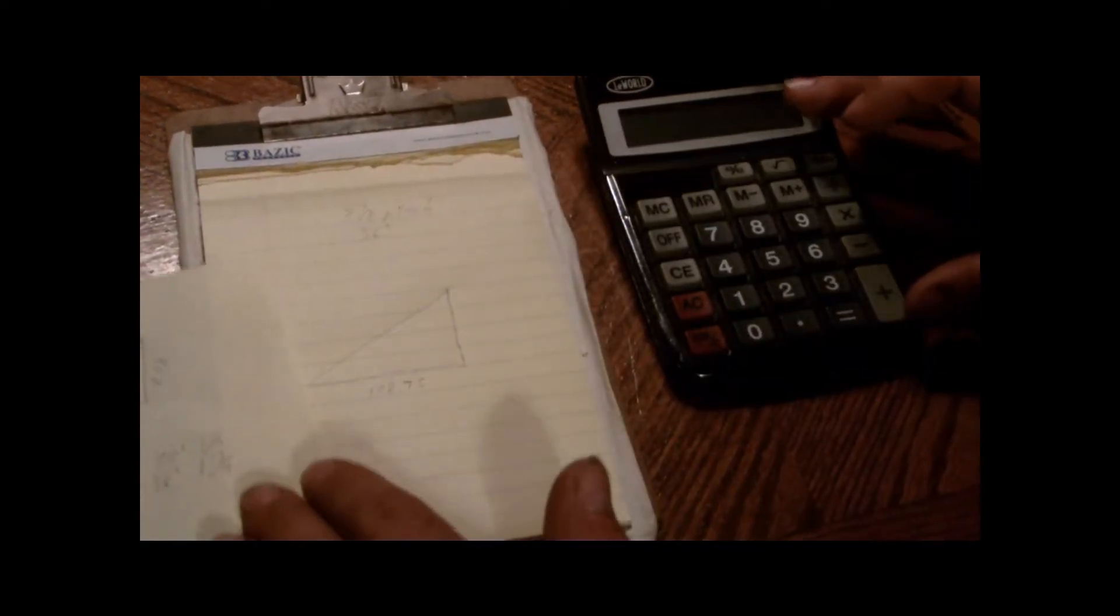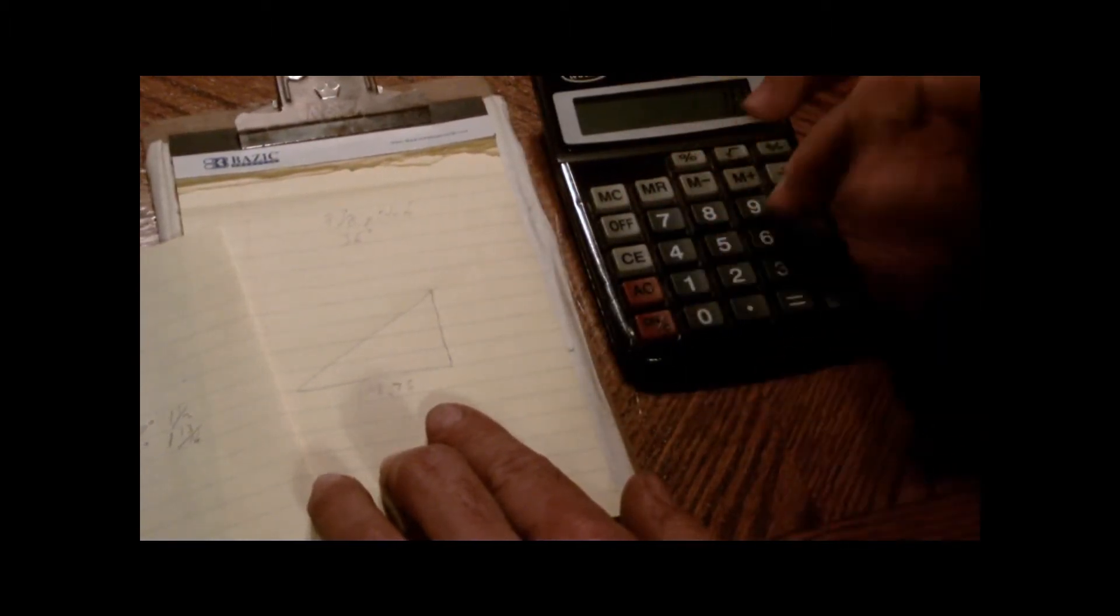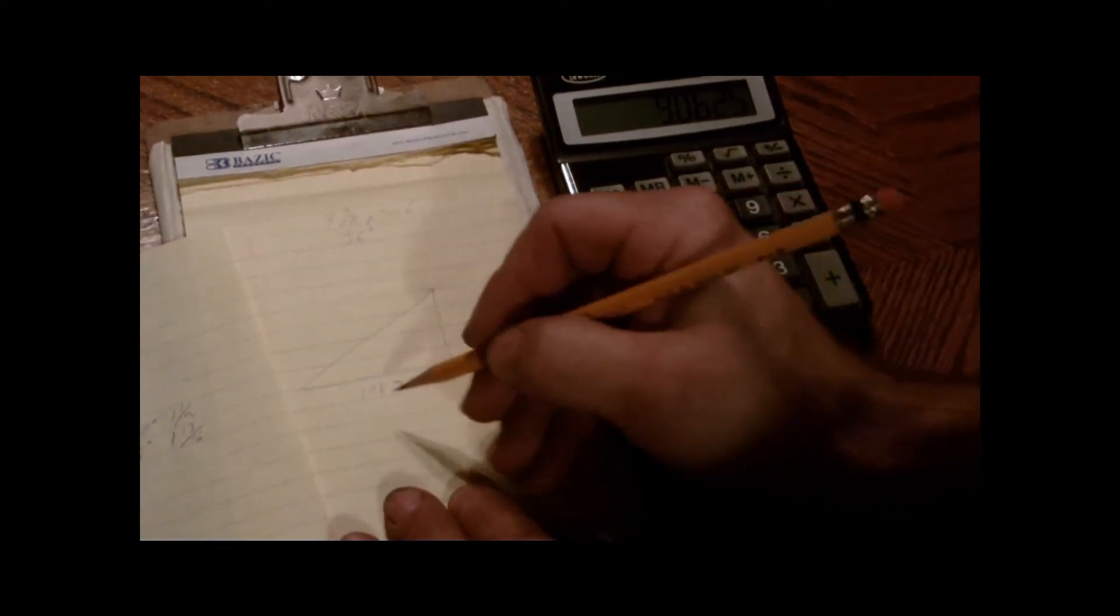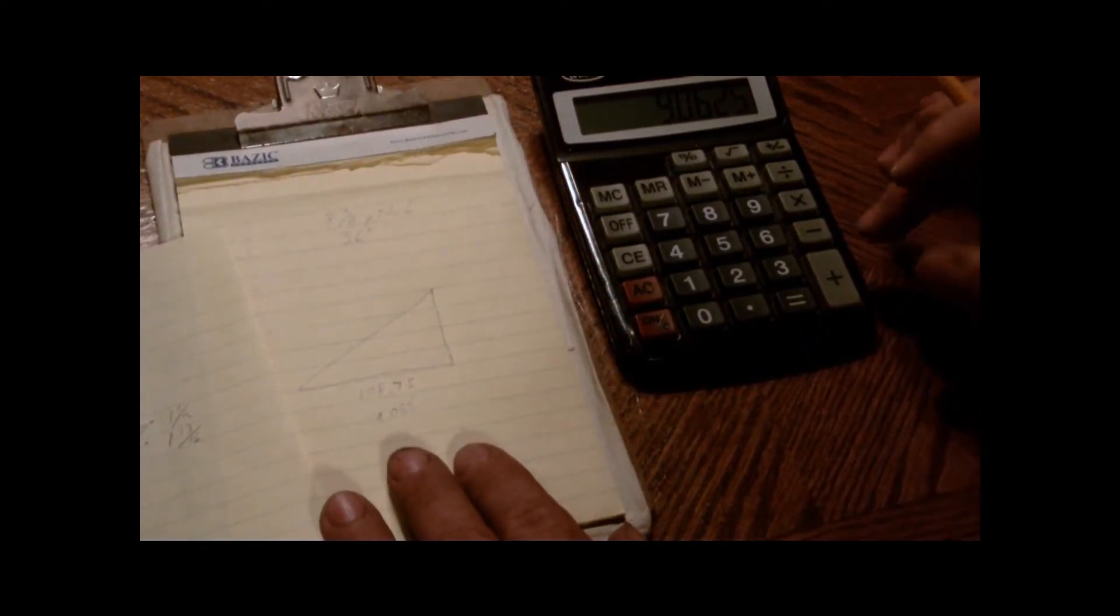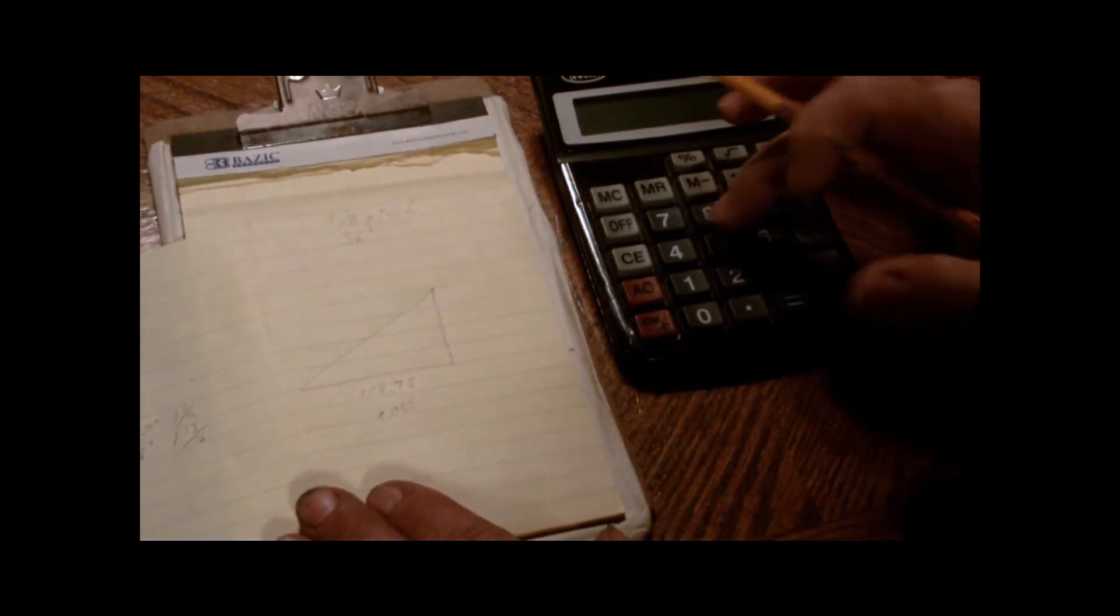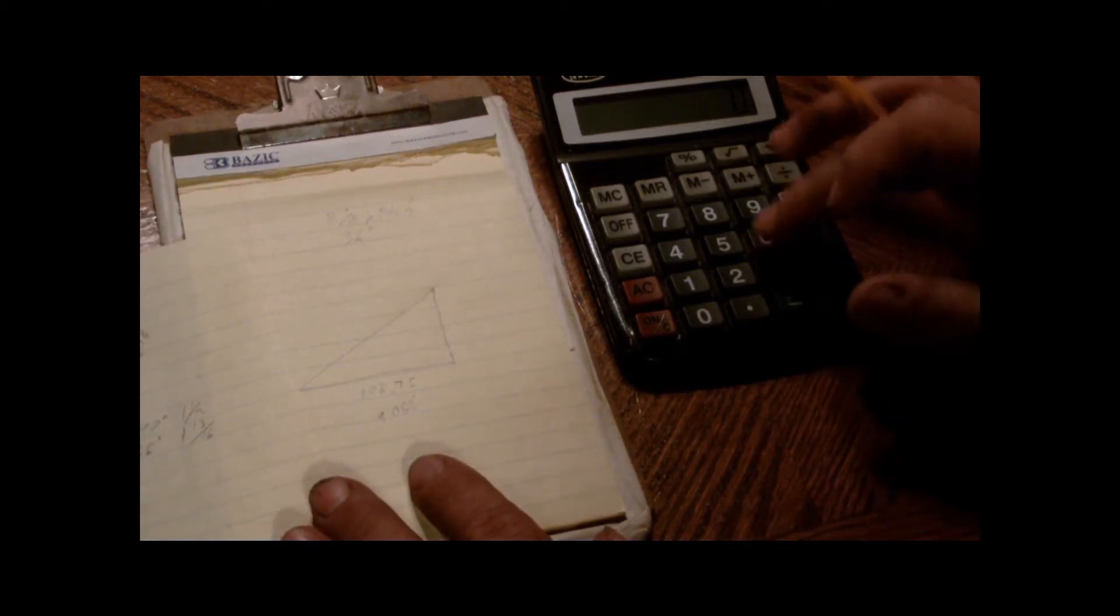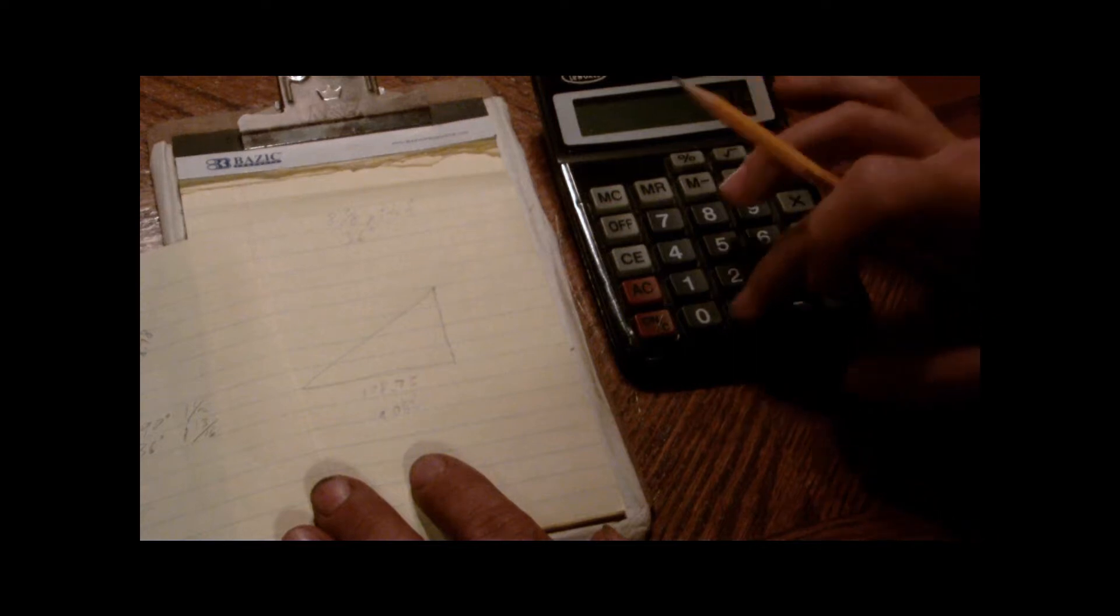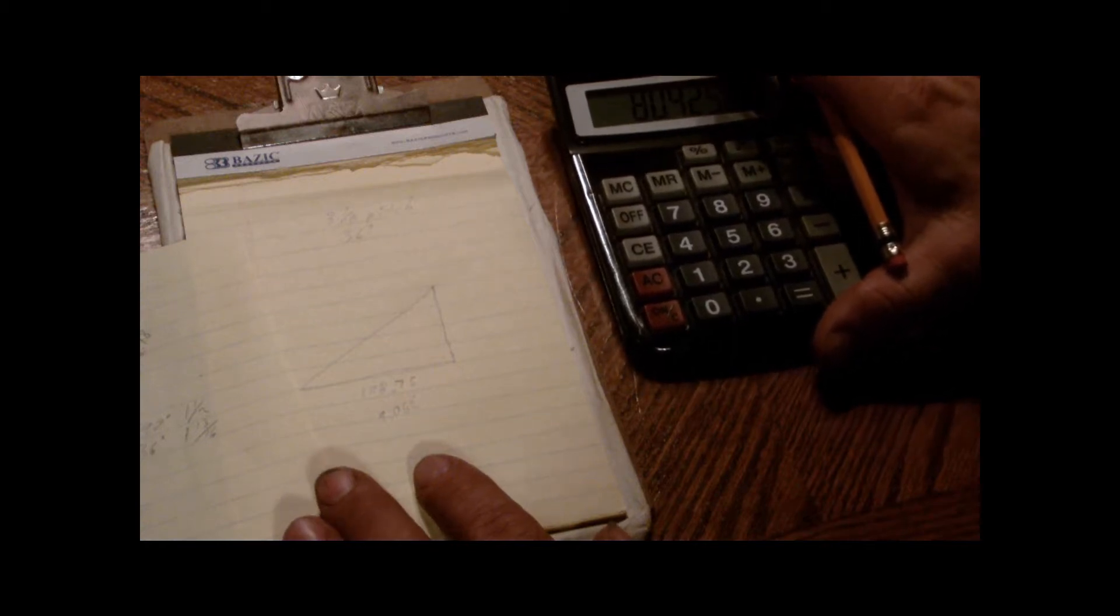So where I start off at is, I want to know how tall it is. So I'll take the 108.75, I'll divide it into 12 inches, and I'll come up with this number which is 9.062. That's feet. I'm going to take that number and I'm going to times it by 8.875.